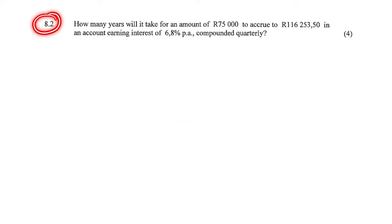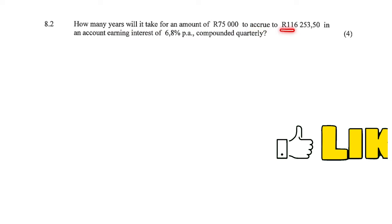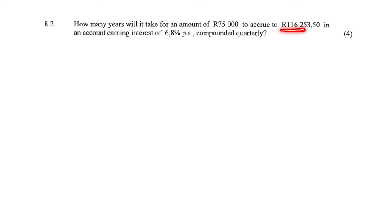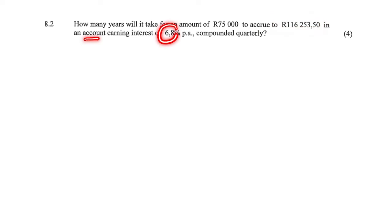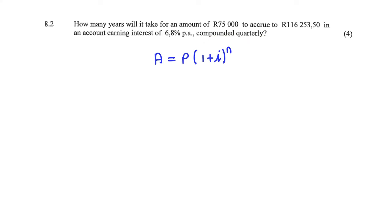8.2. How many years would it take for an amount of 75,000 Rand to grow or accrue to 116,253 Rand and 50 cents? The compound interest equation is A equals P times (1 plus i) to the power of n. And we know